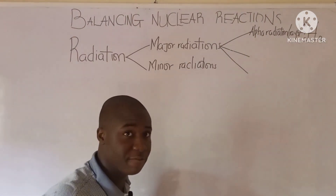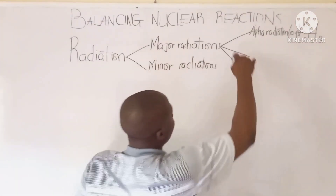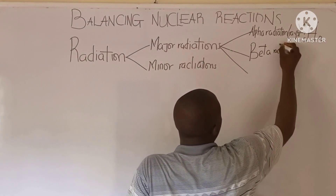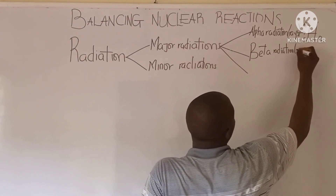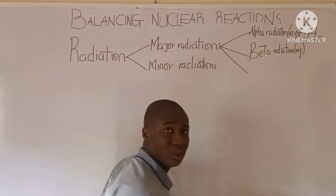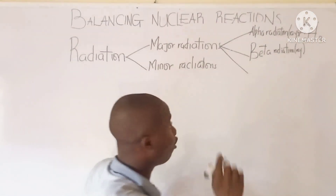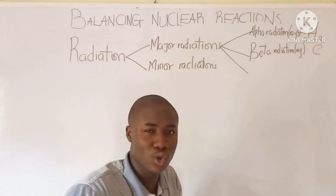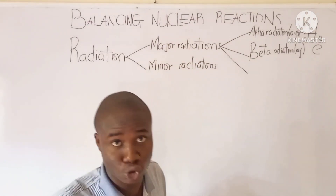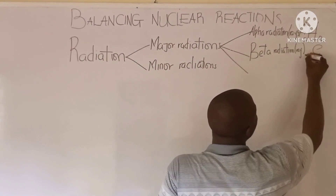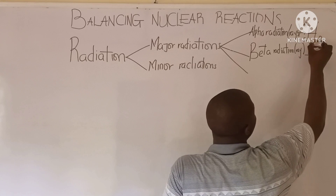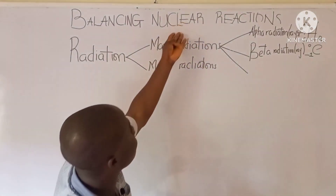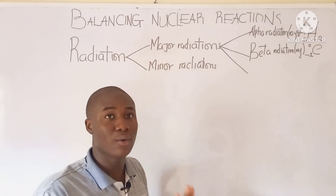The next radiation is the beta radiation, also called the beta ray. For the beta radiation, its symbol is E. The beta radiation is simply an electron, and electrons have a negative charge. So the symbol is 0 and −1. All of these symbols must be noted and memorized, because when we start balancing a nuclear reaction, you'll see how it works.